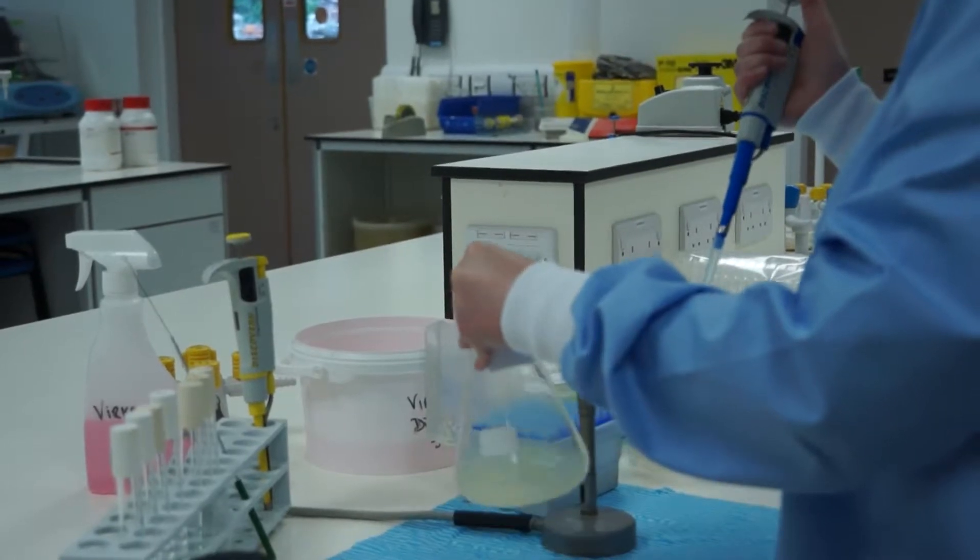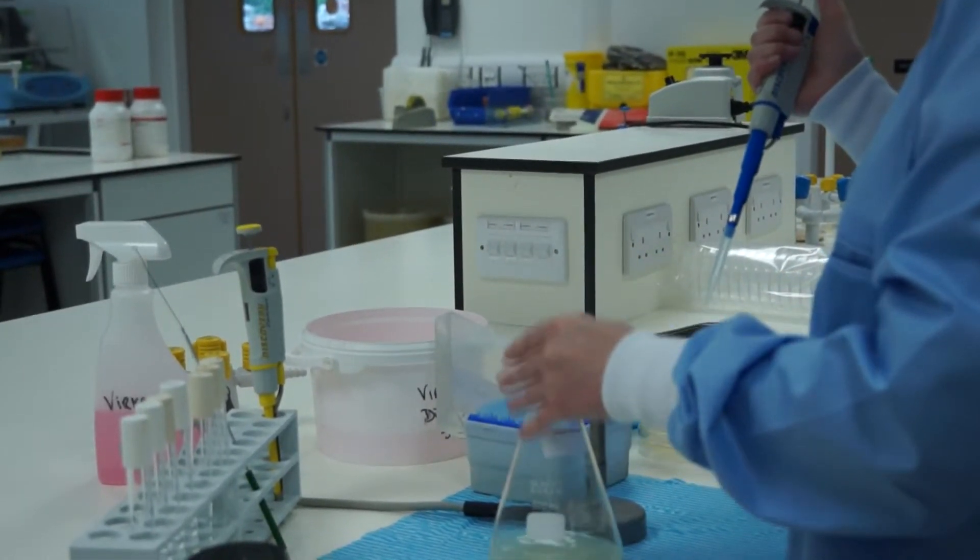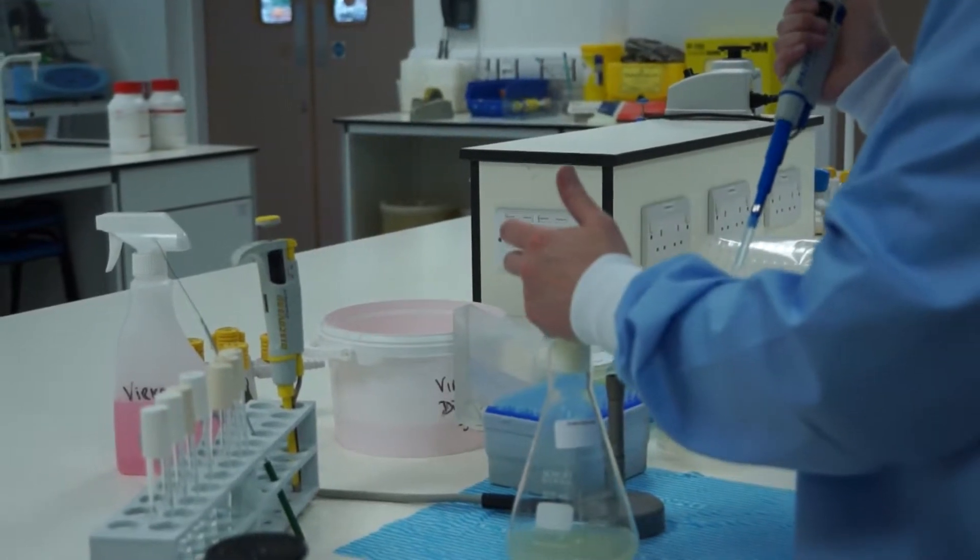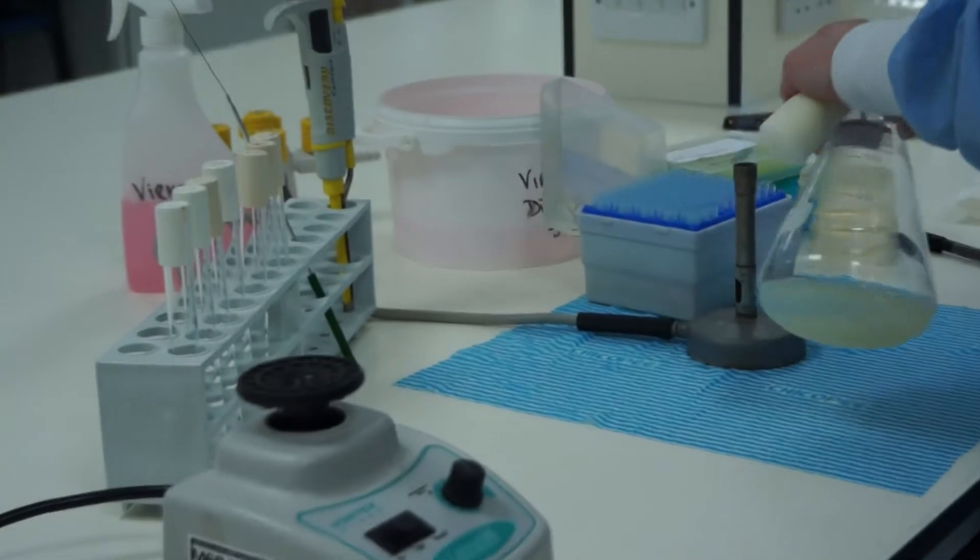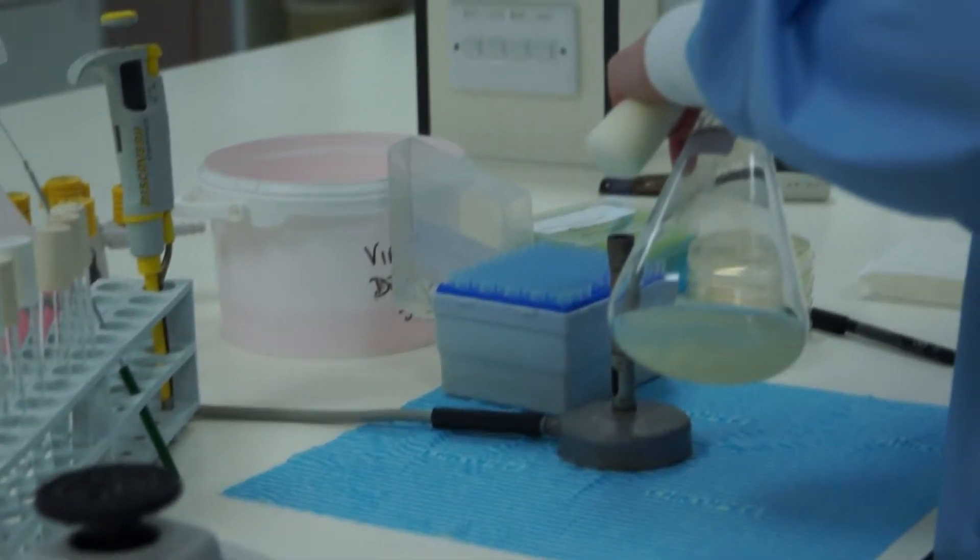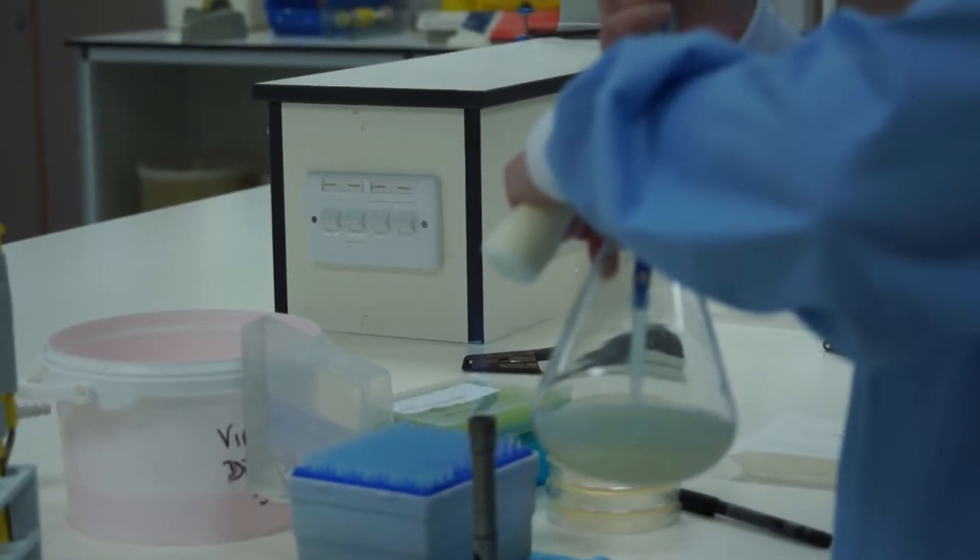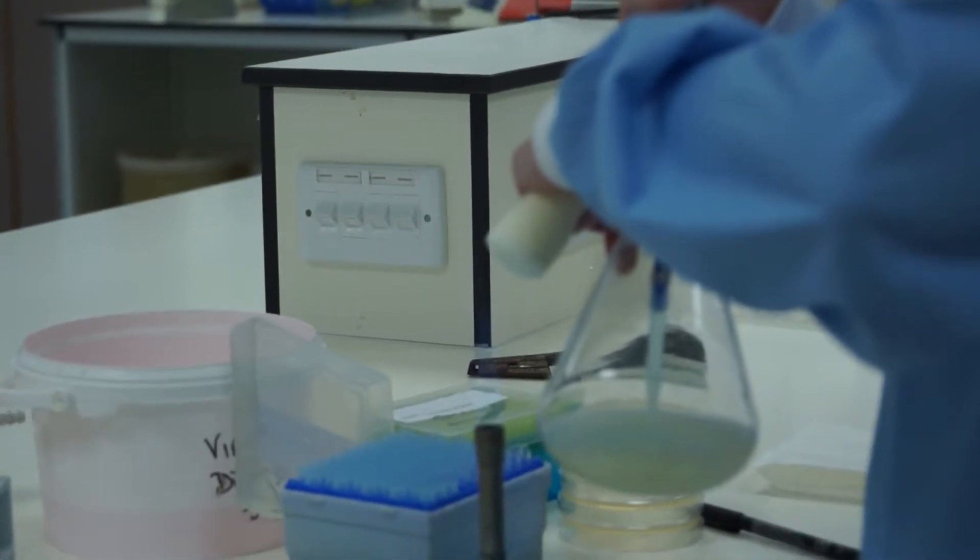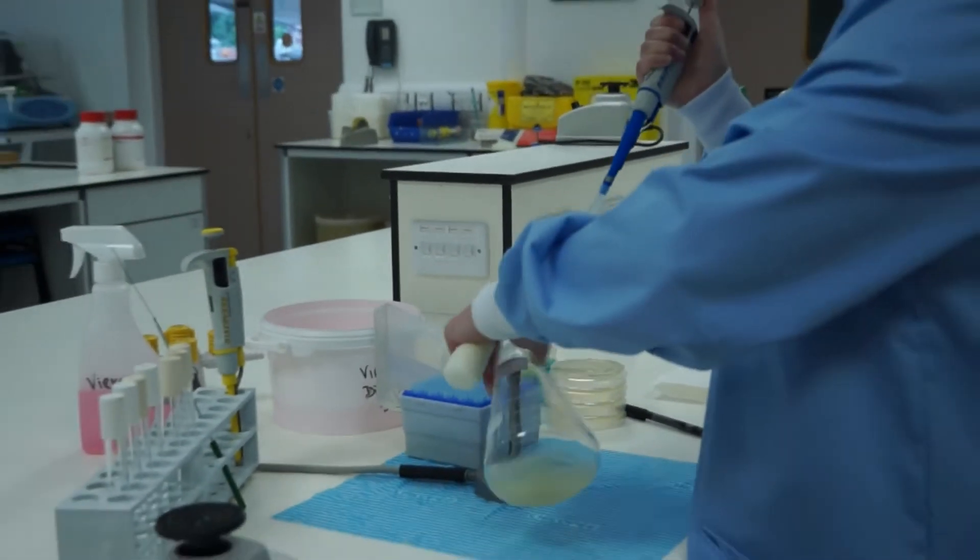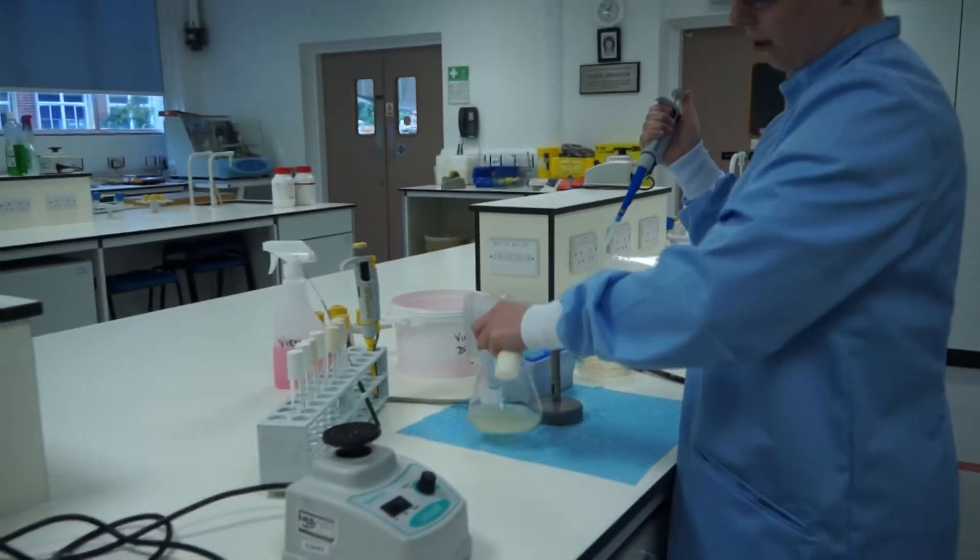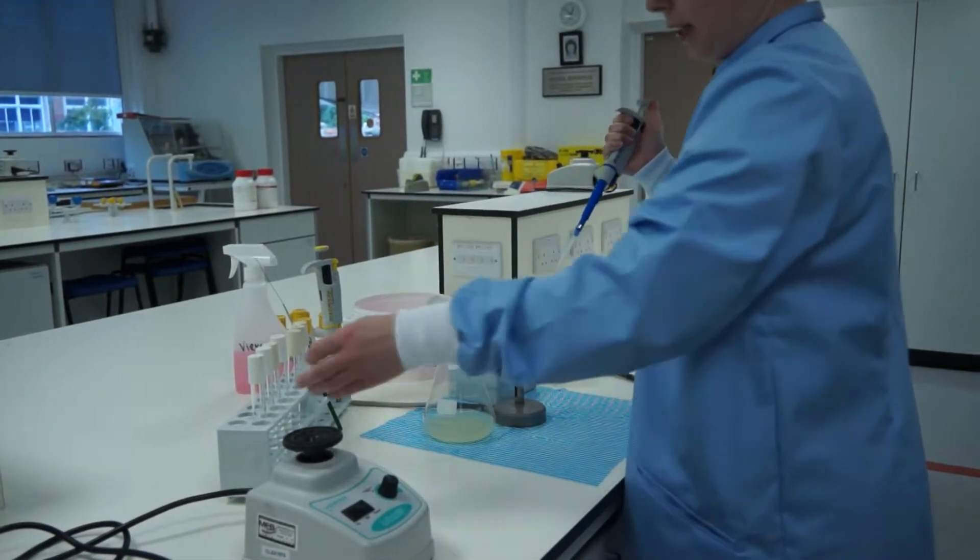Mix our E. coli culture to make sure that our bacteria haven't sunk to the bottom. Remove the bung. Bring the finger. Flame the neck. Expel the air down to the first stop. Put in the tip without touching the bottom of the neck. Slowly release the pressure to draw up the liquid. Making sure not to release too quickly and cause the liquid to jump. Flame the neck. Replace the bung.